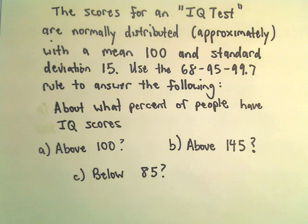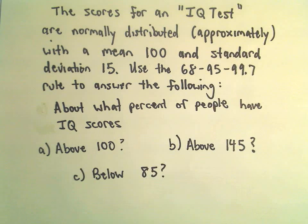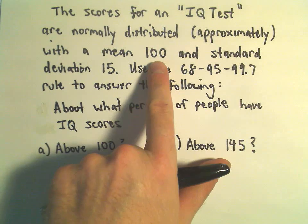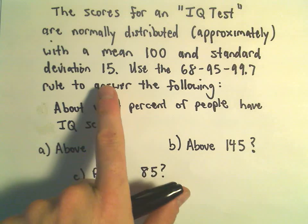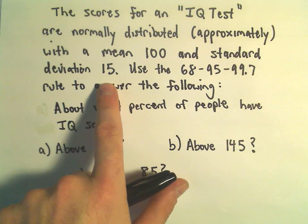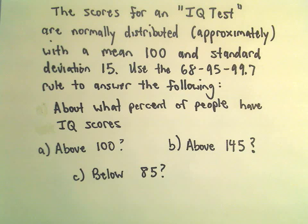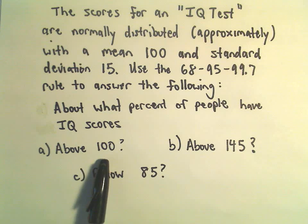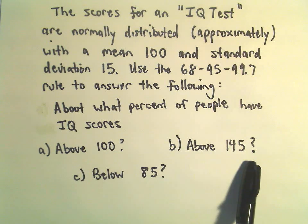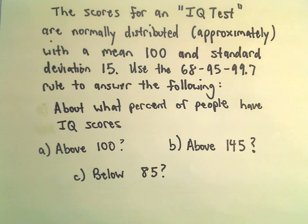There's a popular IQ test where scores are approximately normally distributed with a mean of 100 and a standard deviation of 15. We're going to use the 68-95-99.7 rule to figure out about what percent of people have IQ scores above 100, above 145, and below 85.